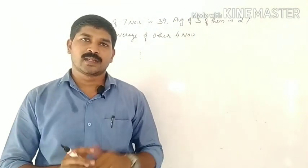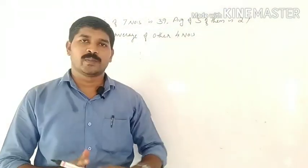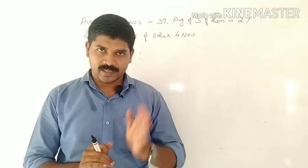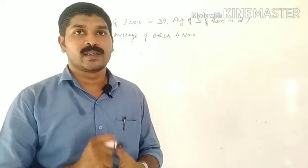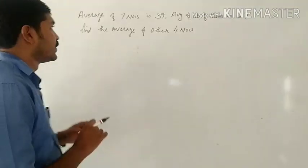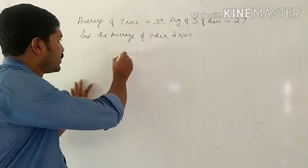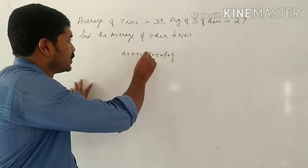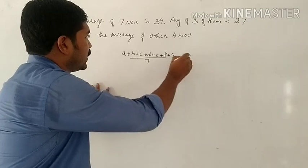The average of 7 numbers is 39, and the average of 3 numbers is 27. We need to find the average of 4 numbers. Let's take a look. For example, I have seven numbers: A plus B plus C plus D plus E plus F plus G. Seven numbers. This is the average, equal to 39.